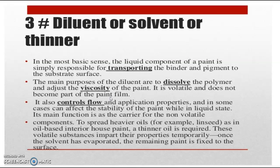The thinner is a volatile material which vaporizes. Its function is to dissolve the polymer and to adjust the viscosity of the paint. It also controls the flow and application properties, and in some cases can affect the stability of the paint while the liquid stays. Its main function is as a carrier for the non-volatile components to spread heavier oils — for example, linseed oil in the case of oil paints. Once the solvent has evaporated, the remaining paint is fixed to the surface of the substrate.